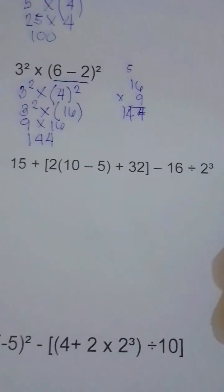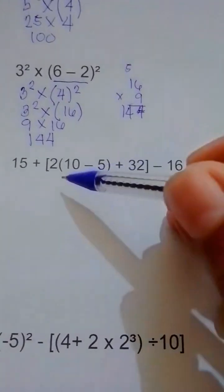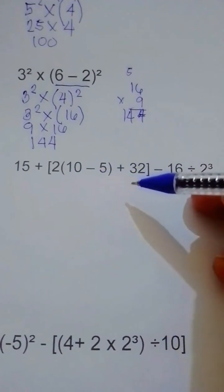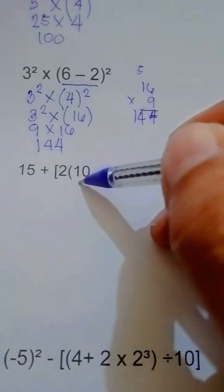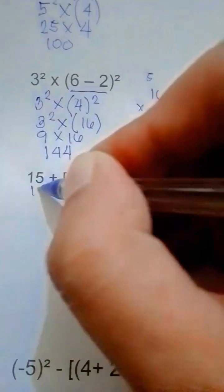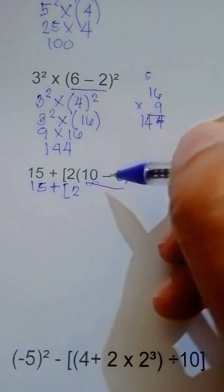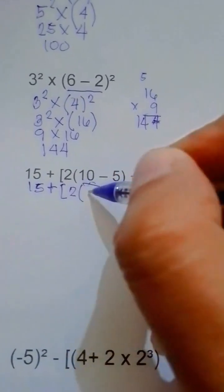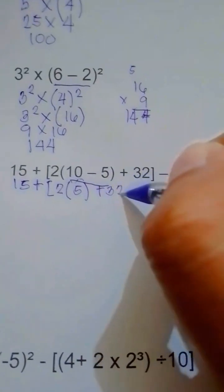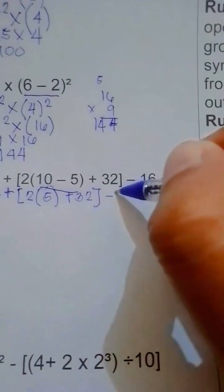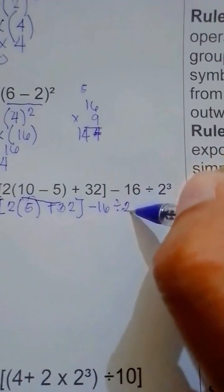Let's do first with the brackets. Inside the brackets there is a parenthesis. We do it from the innermost. So 10 minus 5 first. We have to copy 15 plus, copy the bracket, 2, then 10 minus 5 equals 5, then copy this one plus 32, then the bracket, minus 16 divided by 2 to the third power.